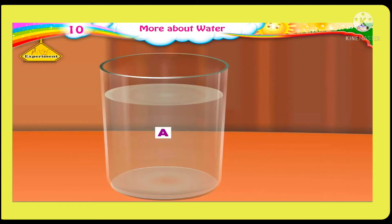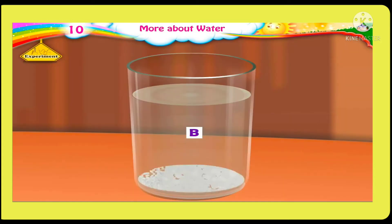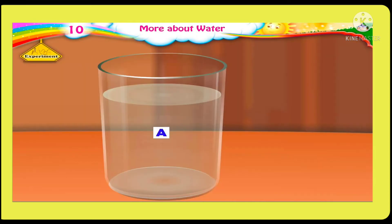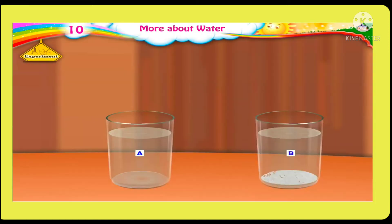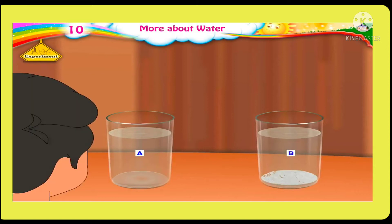The sugar in glass A is not seen, but the rangoli particles in glass B are seen. From this, we can conclude that sugar dissolves in water. The sugar is still there in the water, though we can't see it. The rangoli cannot dissolve and hence it is seen in the glass of water.